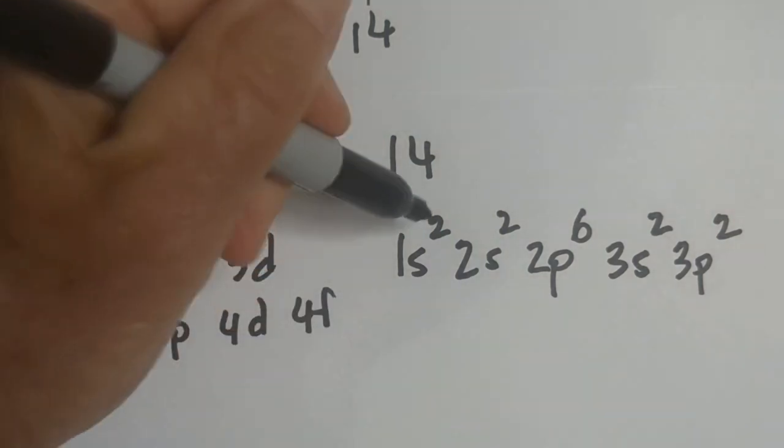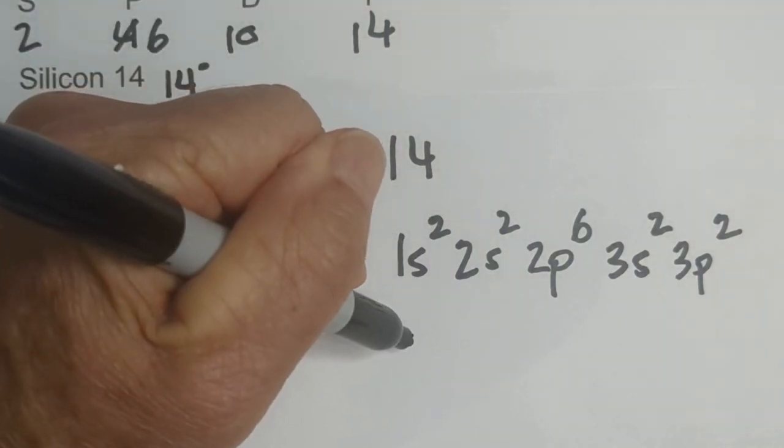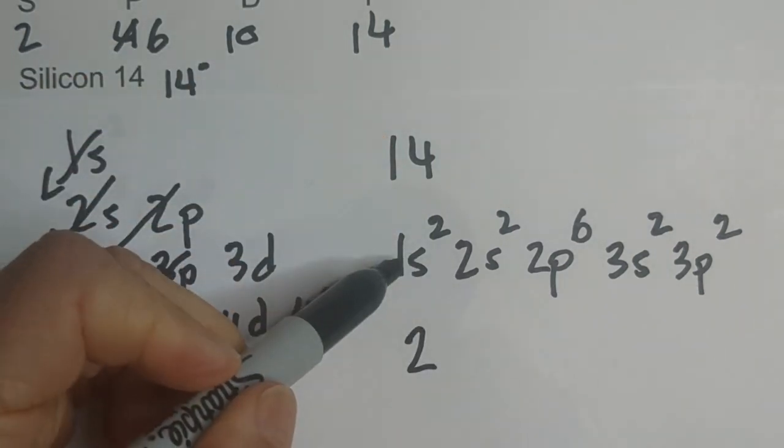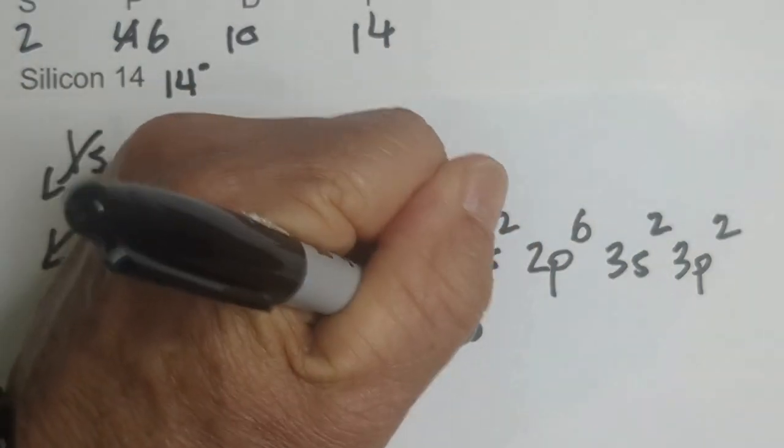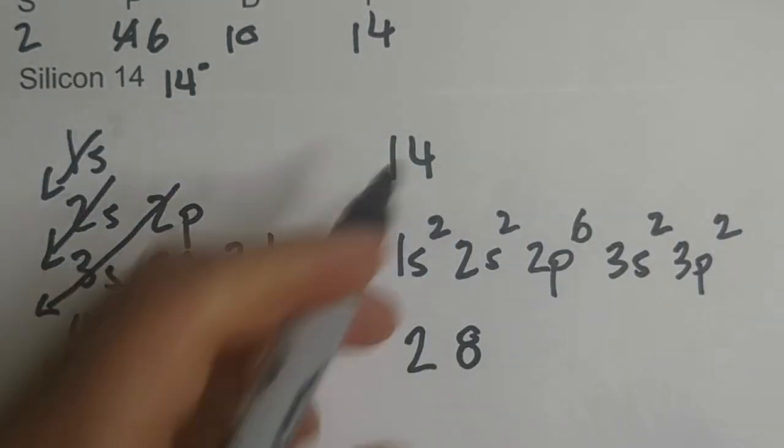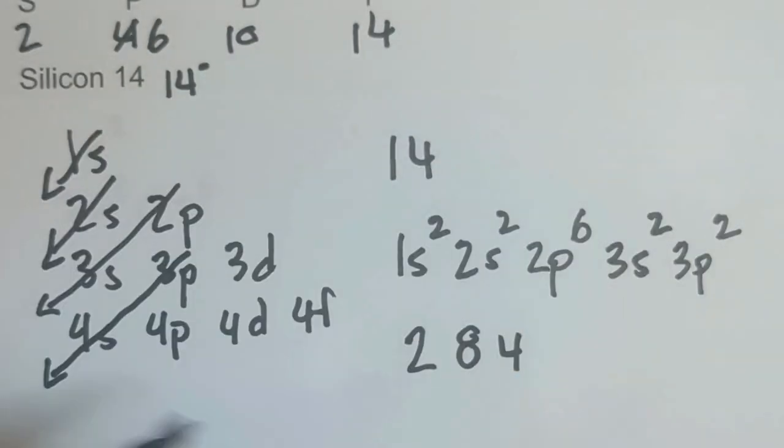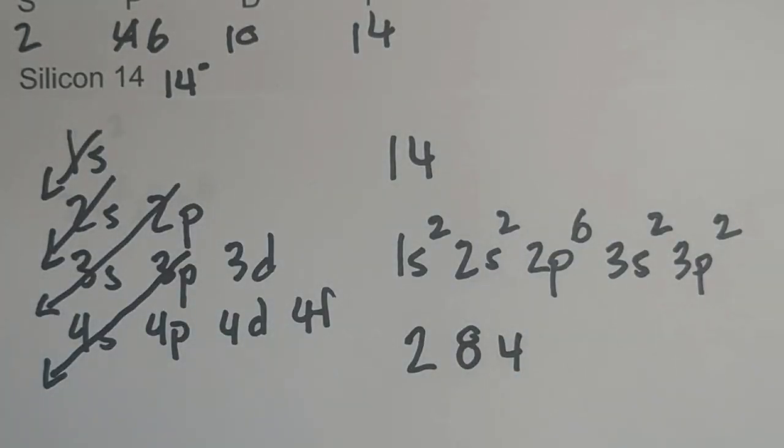So now let's go by energy level. We have 2 at energy level 1, then we have 8 at energy level 2, and then we will have 4 at energy level 3.